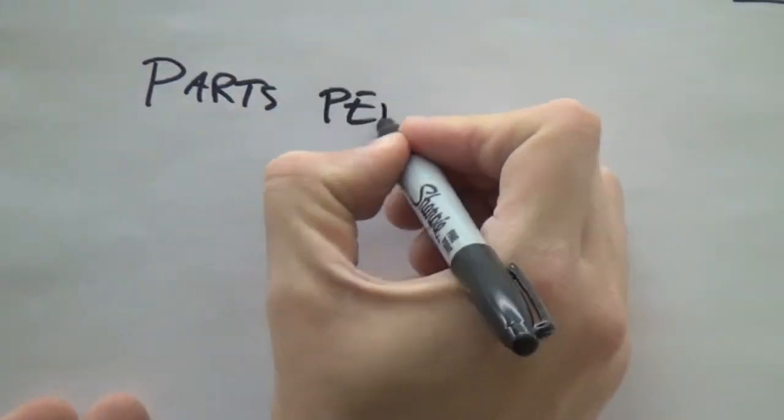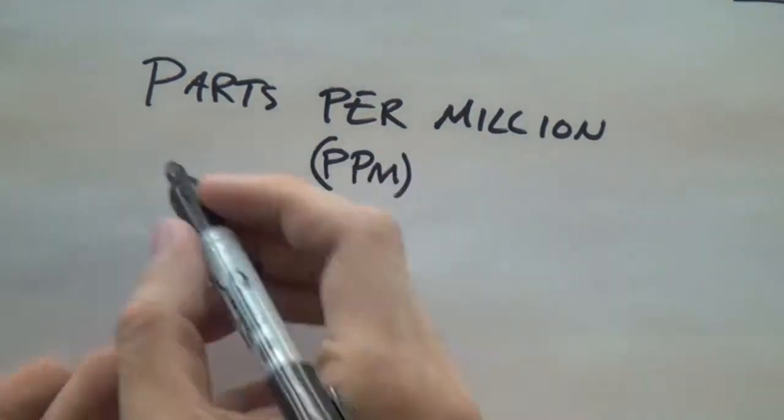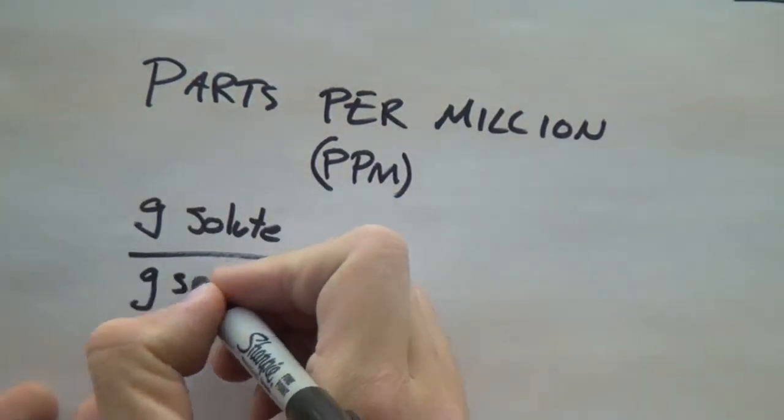I'm going to teach you how to calculate parts per billion, dog. No offense to any dogs. Let's do this. Okay, I think I'm just going to do parts per million instead. It's a little easier. Three less zeros.